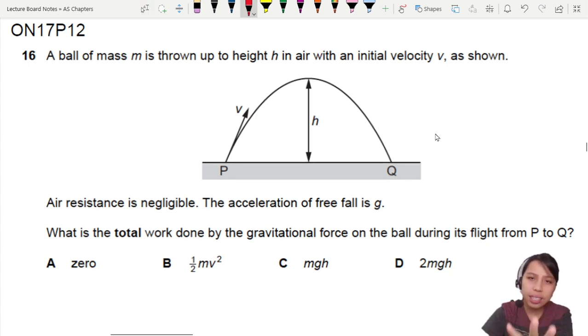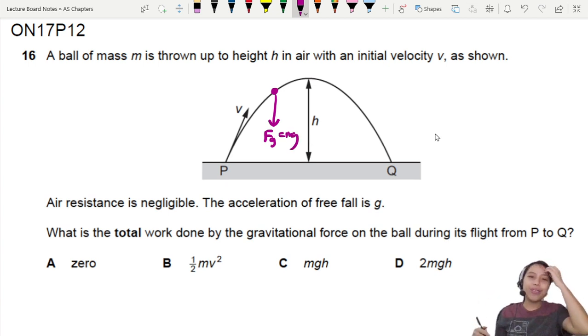So throughout the entire journey, there's always this force acting on the ball. Let's say the ball is here. There will always be this weight of the ball or gravitational force, always pulling it down. So the force is doing work, right? What is the total work done? Total work. Think very carefully.